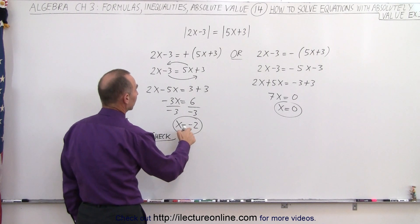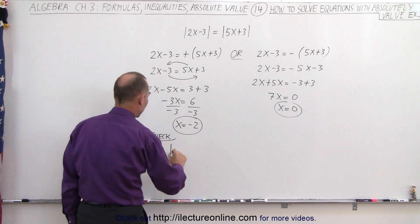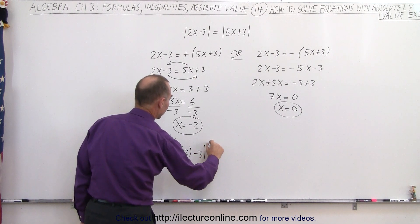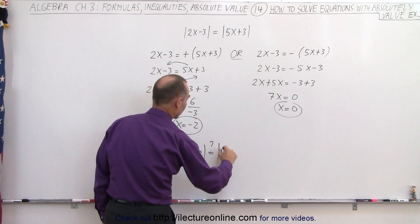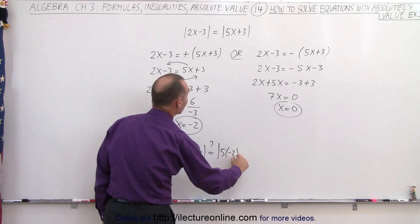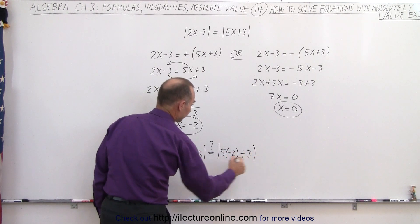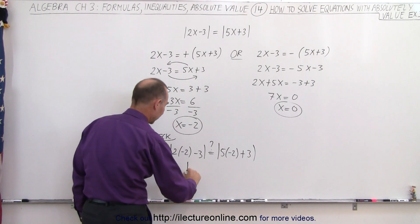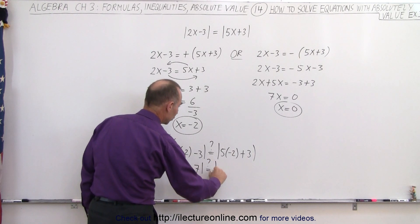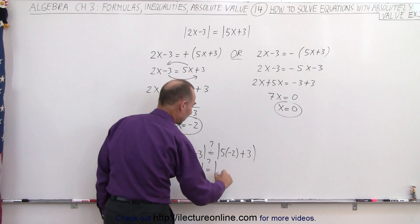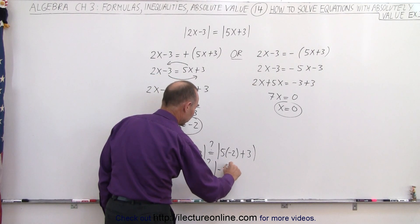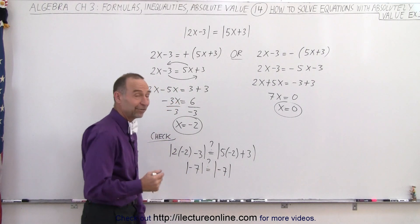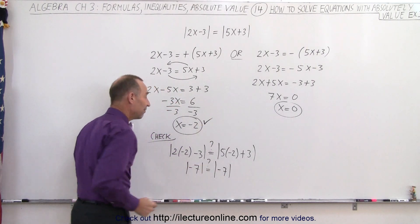So first, we're going to plug in negative 2. So the absolute value of 2 times negative 2 minus 3, is that question mark equal to 5 times negative 2 plus 3. Alright, simplifying that, we get negative 4 minus 3, that's a negative 7. Is that indeed equal to negative 10 plus 3, that gives us a negative 7. And sure enough, the absolute value of negative 7 must equal the absolute value of negative 7. So this is a valid solution.